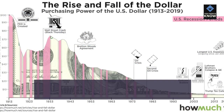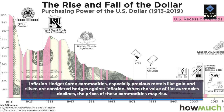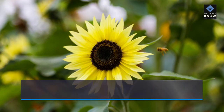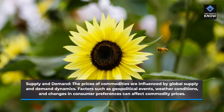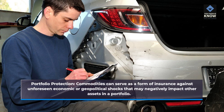Inflation hedge: some commodities, especially precious metals like gold and silver, are considered hedges against inflation. When the value of fiat currencies declines, the prices of these commodities may rise. Supply and demand: the prices of commodities are influenced by global supply and demand dynamics. Factors such as geopolitical events, weather conditions, and changes in consumer preferences can affect commodity prices. Portfolio protection: commodities can serve as a form of insurance against unforeseen economic or geopolitical shocks that may negatively impact other assets in a portfolio.